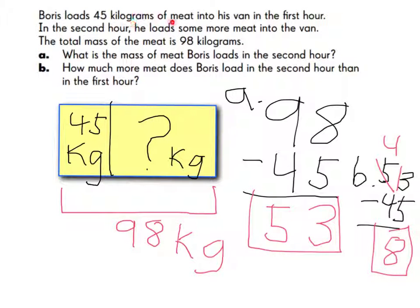Boris loads 45 kilograms of meat into his van in the first hour. In the second hour, he loads more meat into the van. The total mass of the meat is 98 kilograms. Part A: What is the mass of the meat Boris loads in the second hour? Part B: How much more meat does Boris load in the second hour than in the first hour? Part A: 98 minus 45 equals 53. Part B: 53 take away 45 equals 8.